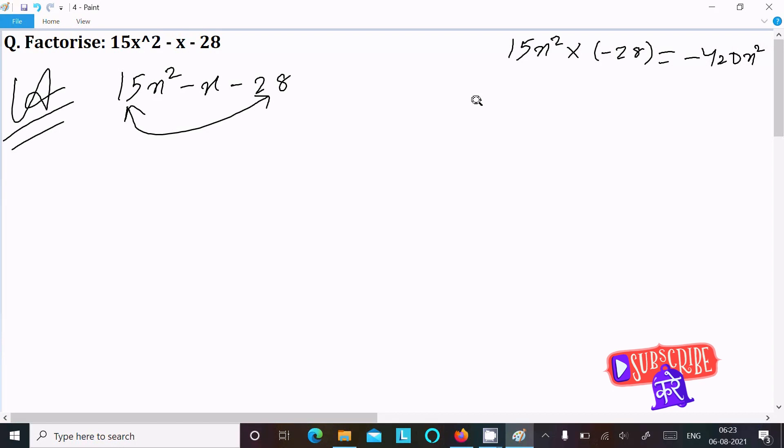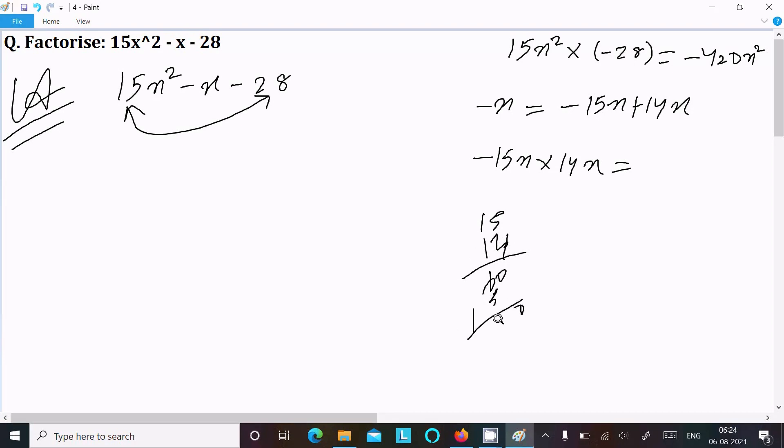After that take the middle terms. So middle term -x, we can write -x as -15x + 14x. When you subtract it equals -x, and when you multiply 15x into 14x, it comes -210x².